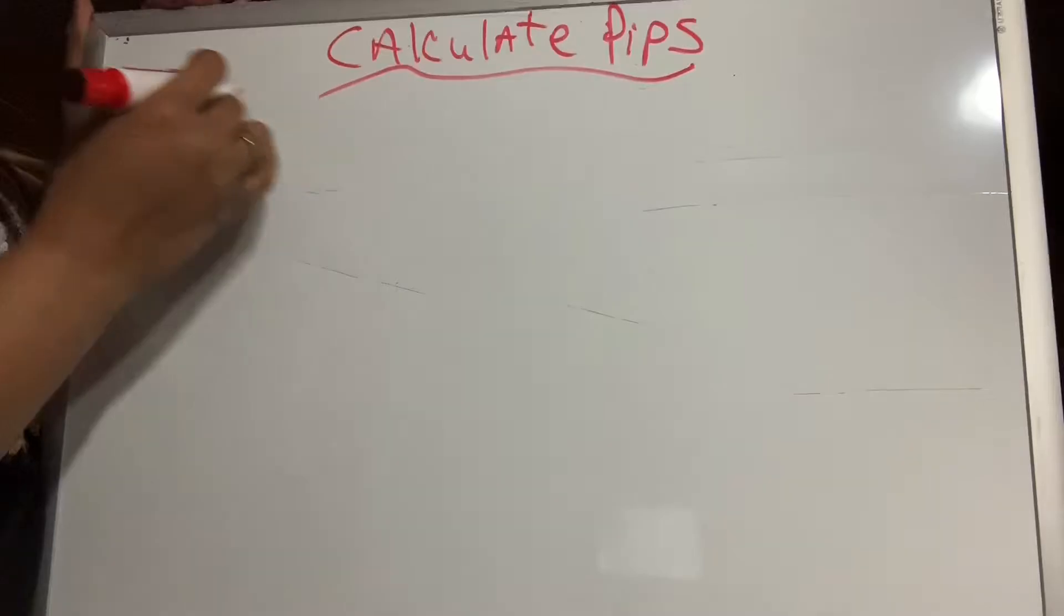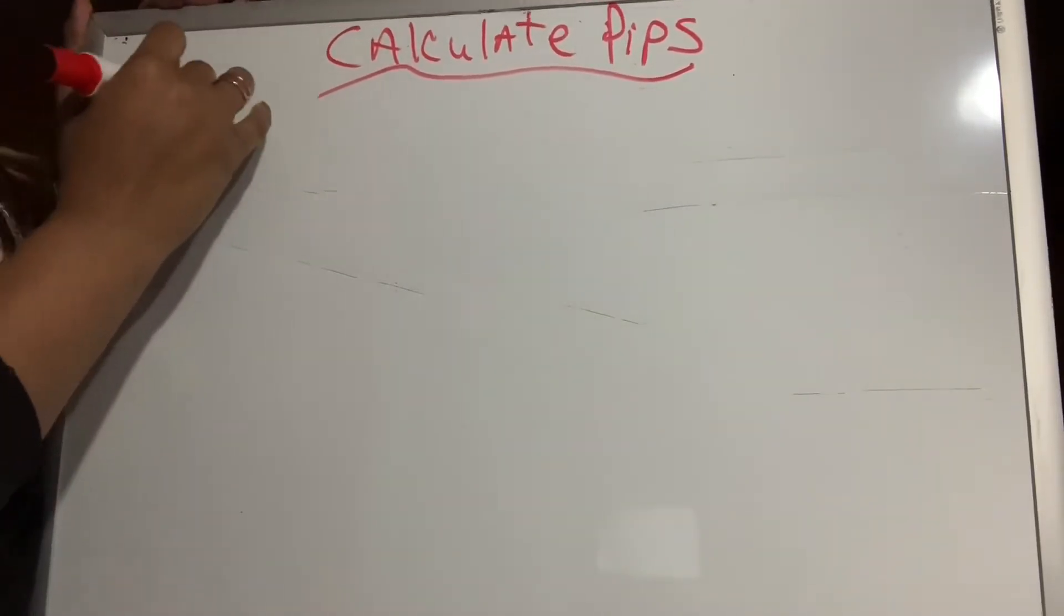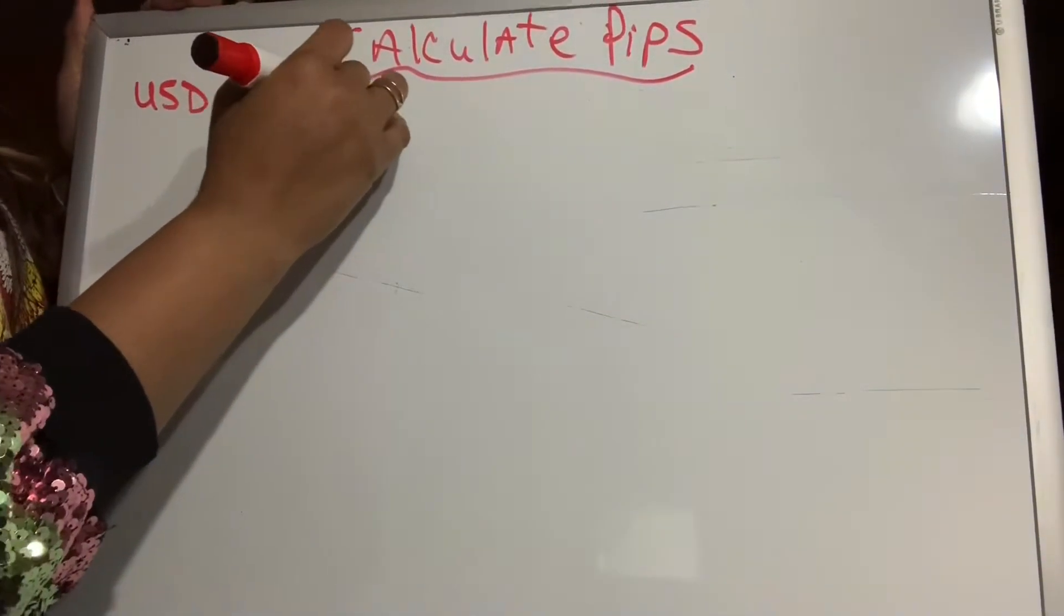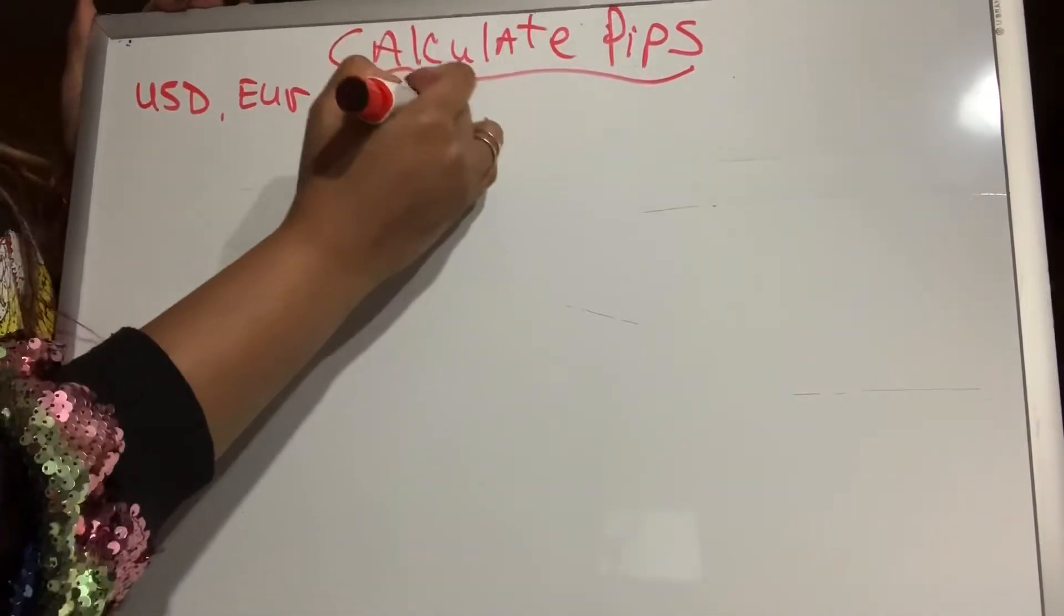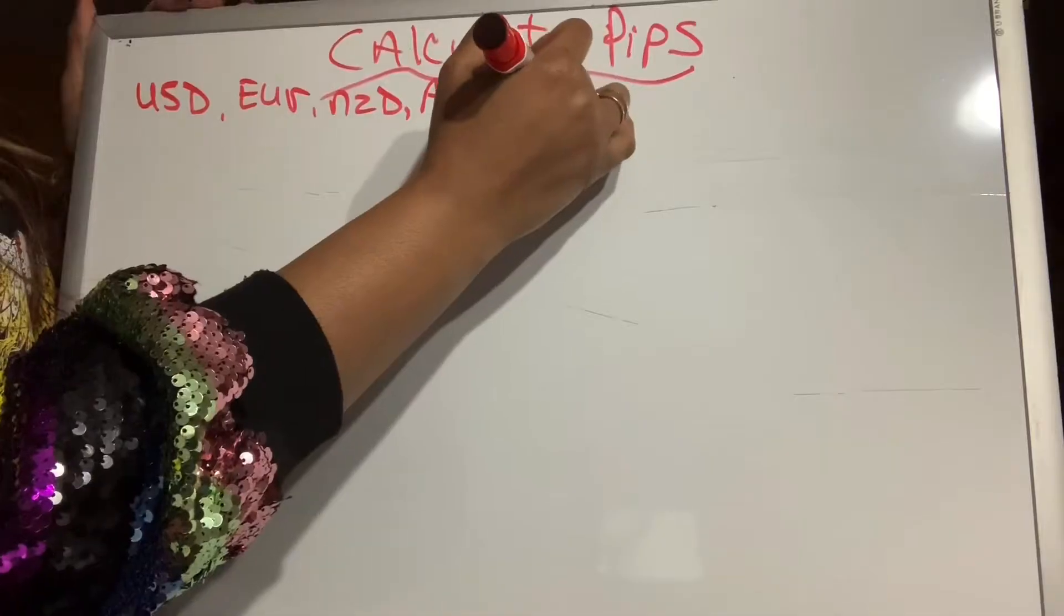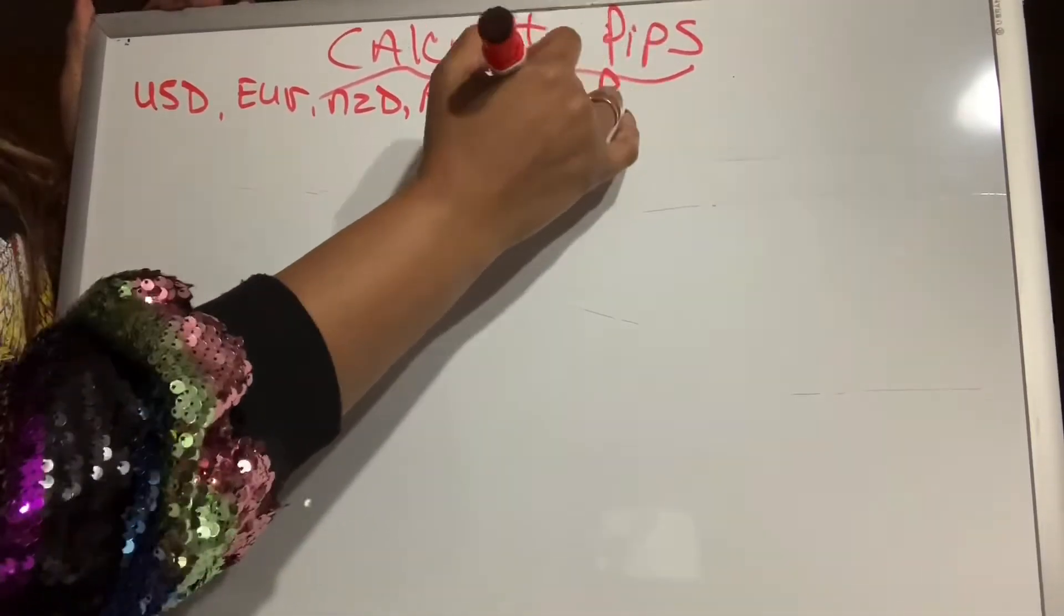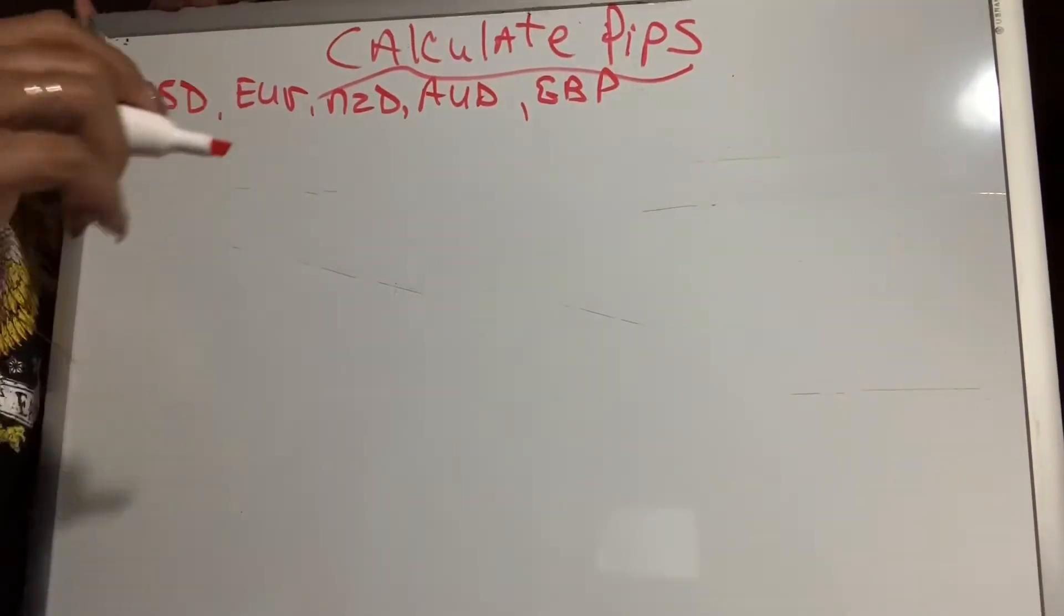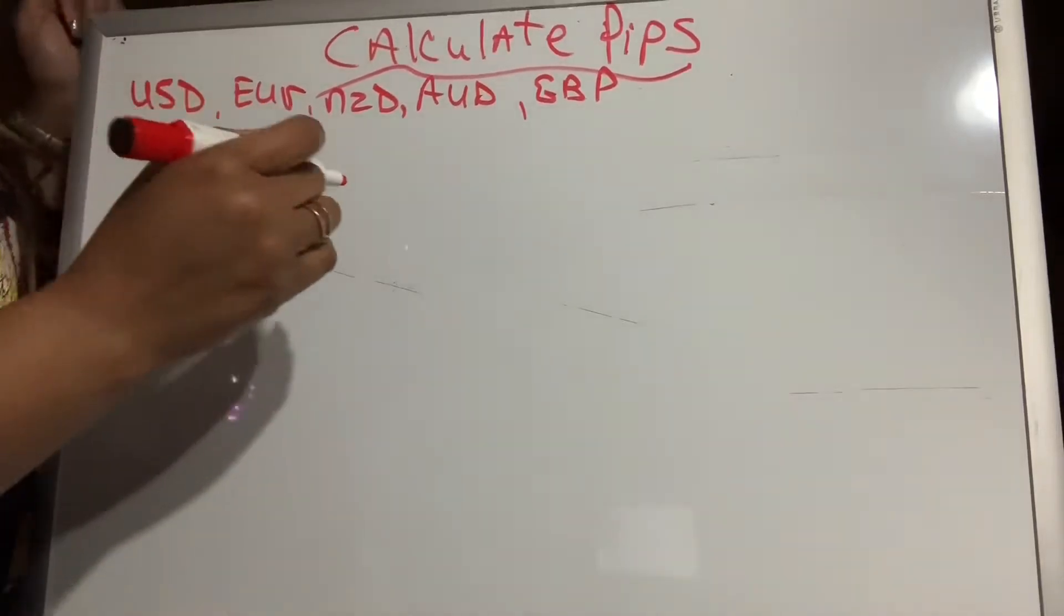We're talking about your foreign currency: USD, EUR, NZD, AUD, GBP, those pairs. This rule applies to calculating PIPs.